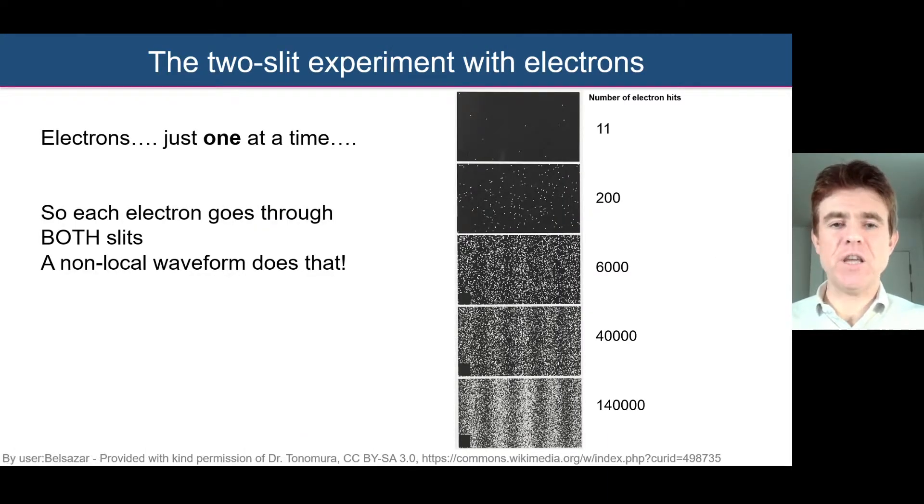Now what gets really interesting here is what if we put the electrons through one by one. This is to really turn down the frequency of emission of those electrons from that electron gun. If we look at only detecting 11 electrons on that screen on the right-hand side, we get this result here. As we move on to 200, 6,000, all the way up to 140,000 one-by-one electron detections, we still see we get this interference pattern, these multiple clusters of electrons. That can only mean that each and every single electron, one by one, has gone through both slits. Each electron has behaved like a wave.